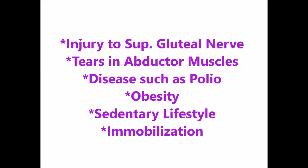If these muscles become weak due to or in combination with the following causes, a Trendelenburg sign and/or gait is seen. Causes include a power failure, which may be due to lesions or injury to the superior gluteal nerve that supplies both abductors, leading to weakness or paralysis. There may also be tears in the abductor muscles, diseases such as poliomyelitis, obesity, a sedentary lifestyle, or immobilization leading to muscle wasting or weakness.